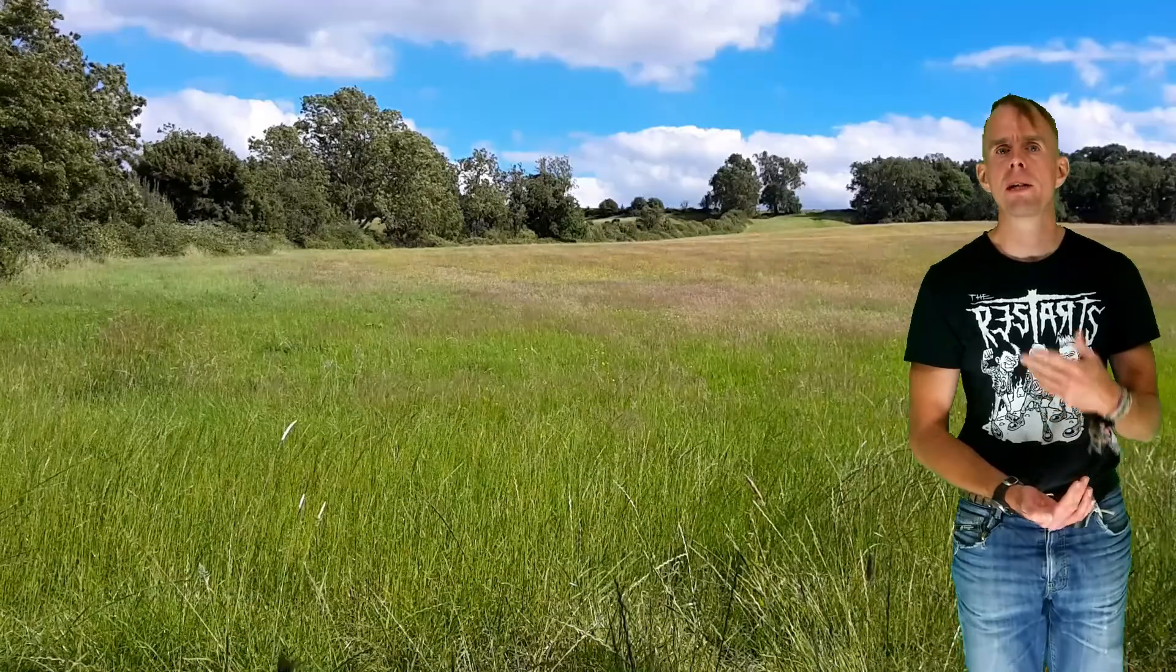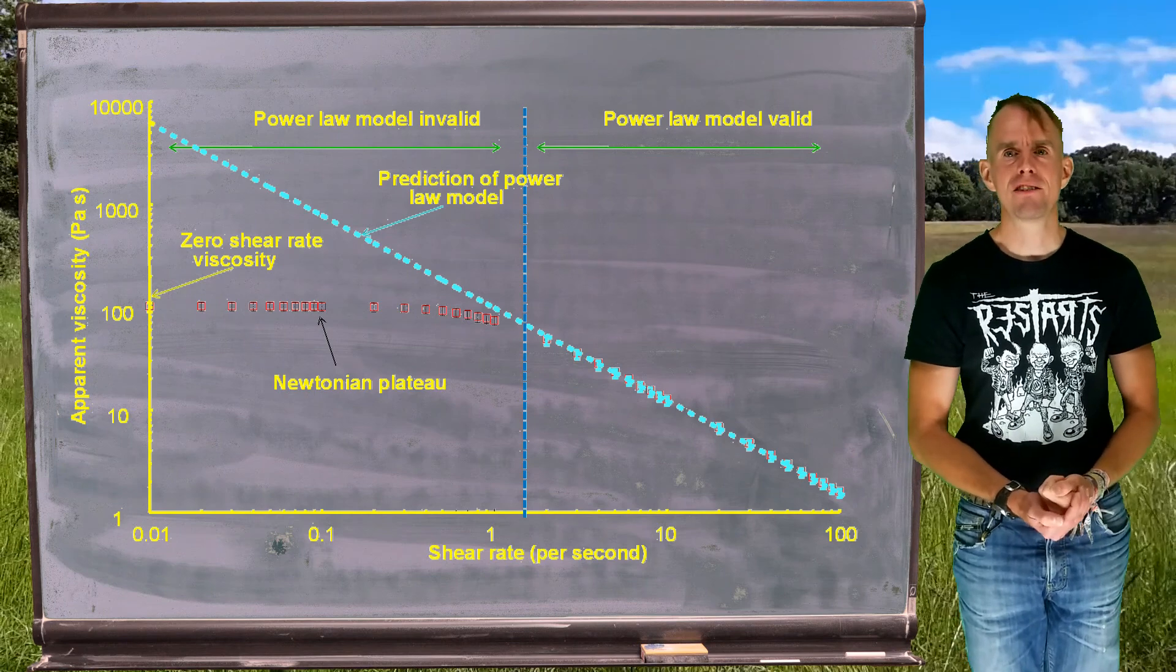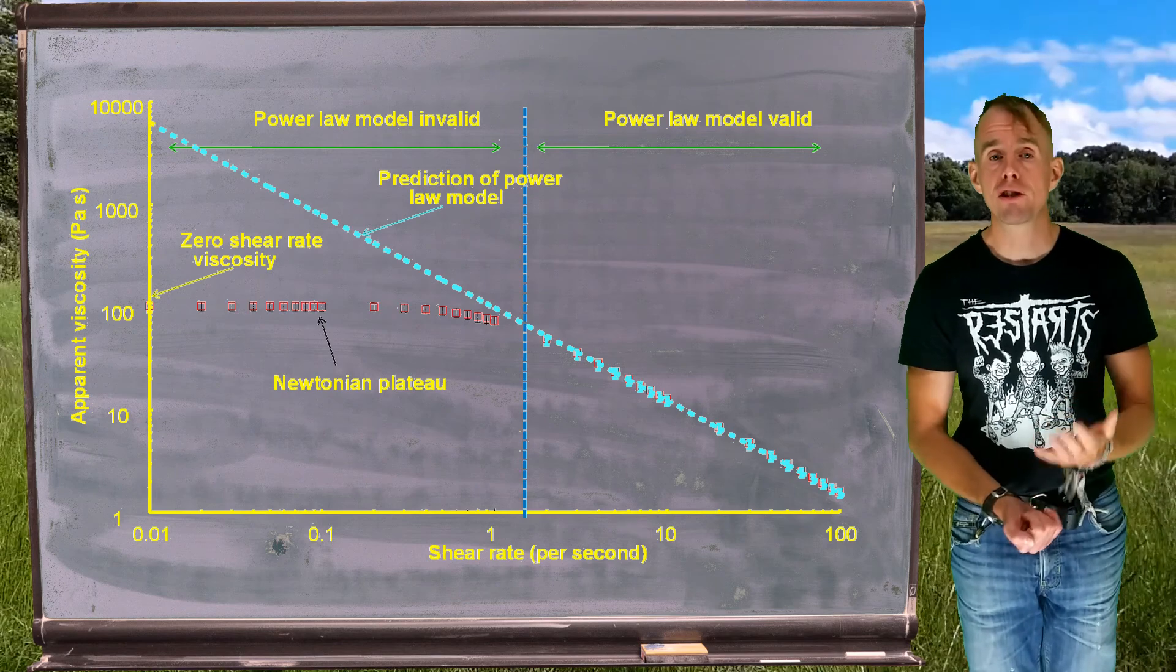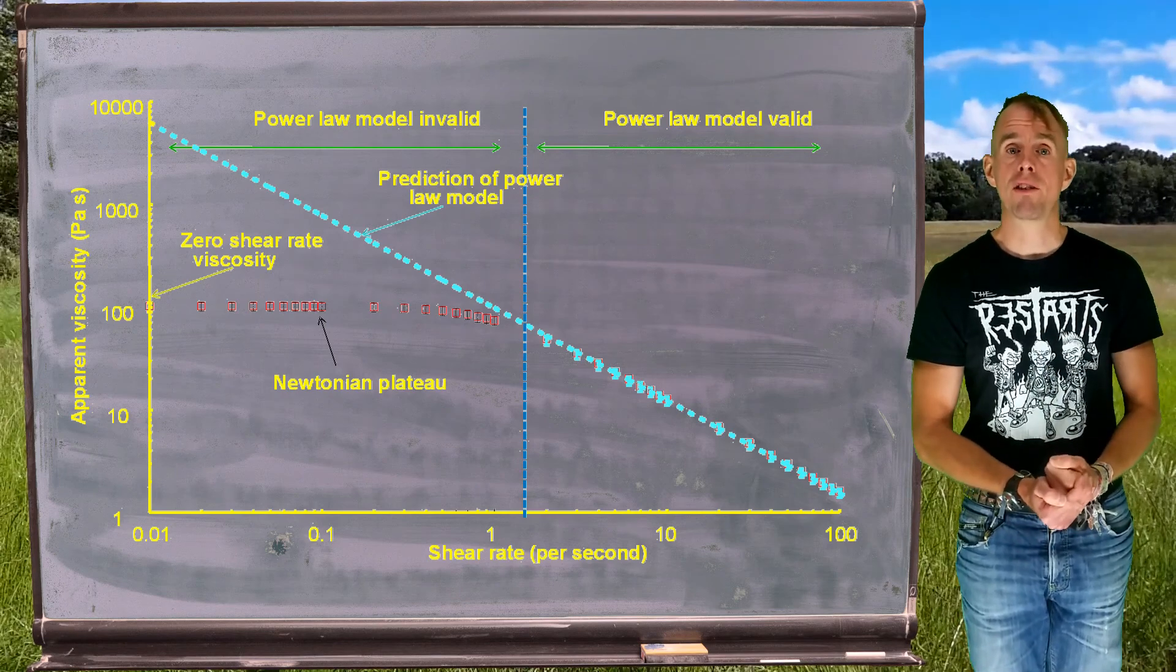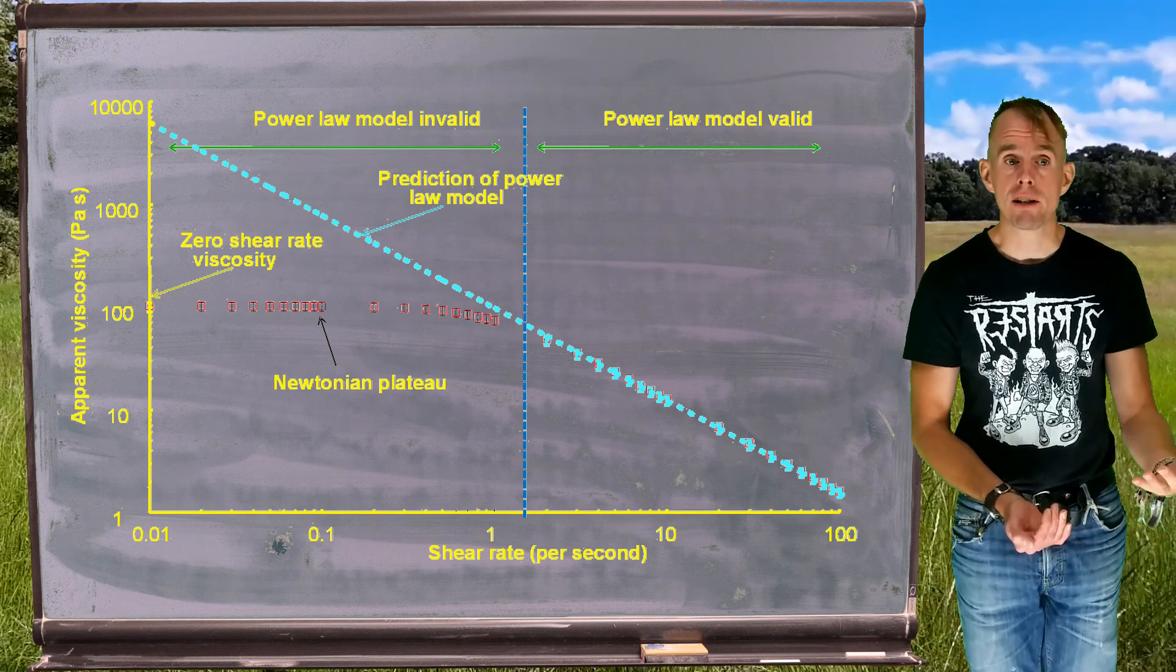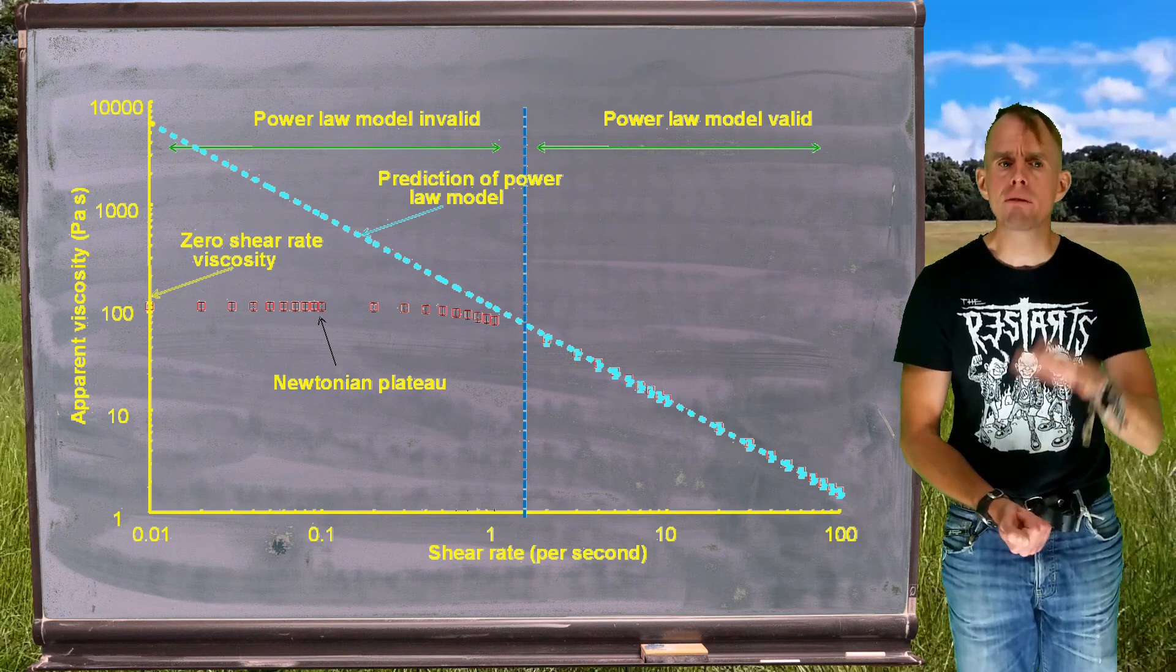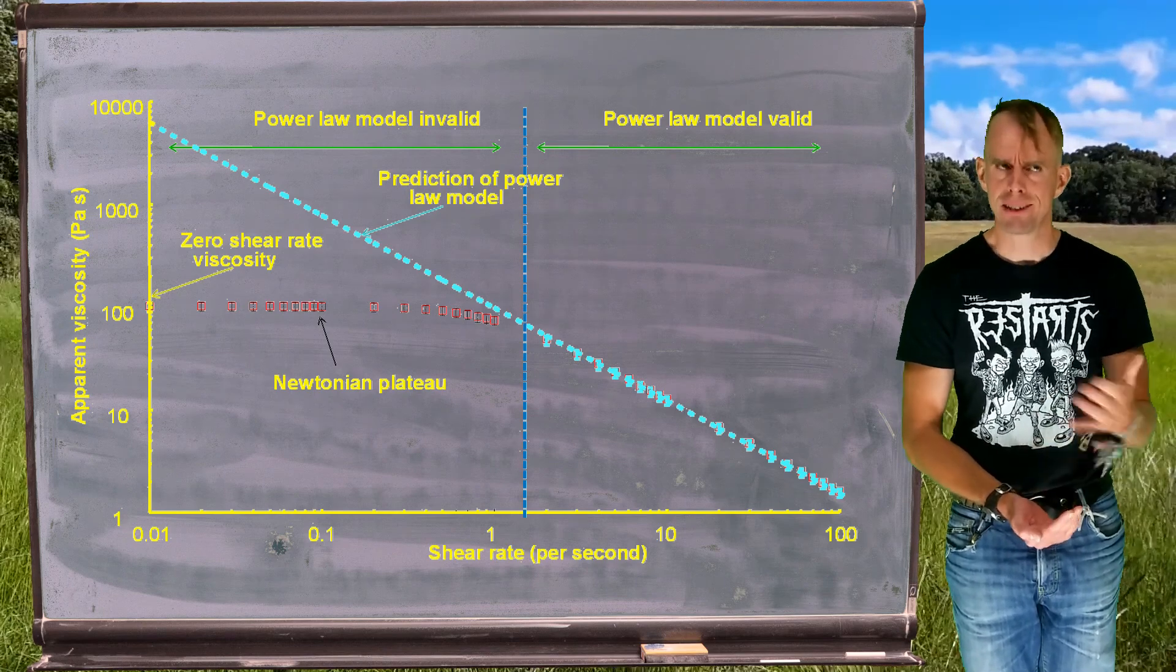First of all, let's start off by reminding ourselves why sometimes we need a more complex description than the power law fluid. So on the blackboard in front of you is a graph that we saw in lecture two. This plots apparent viscosity as a function of shear rate for the prediction of the power law model, which is there in light blue, and for some real data. It was for polystyrene, and those are the data symbols that we see on the plot as well. Remember, we have log-log axes on this graph, which is why our power law prediction looks linear. It's not, it's power law.